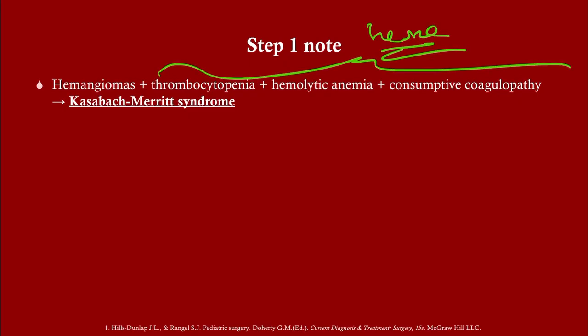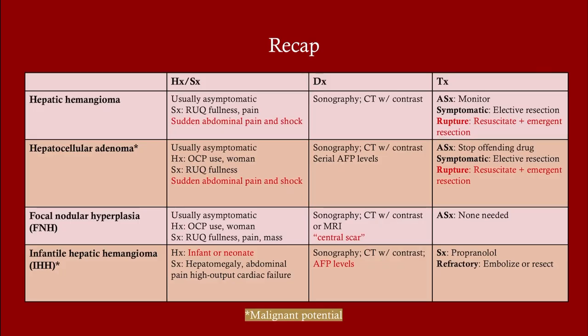A Step 1 note: patients with hemangiomas — whether in the liver or elsewhere — should be monitored for thrombocytopenia, hemolytic anemia, and consumptive coagulopathy. This constellation is called Kasabach-Merritt syndrome. It's very unlikely to come up on Step 2 or Step 3, but is fair game for Step 1. This concludes the recap of everything covered.